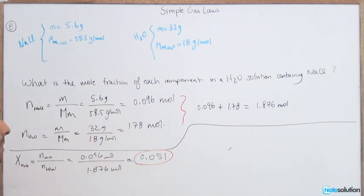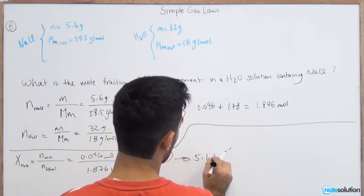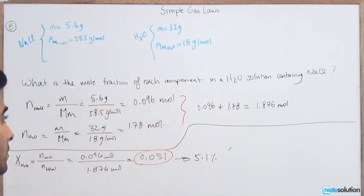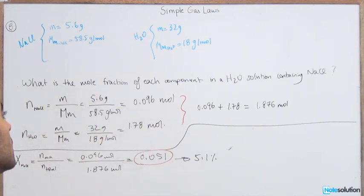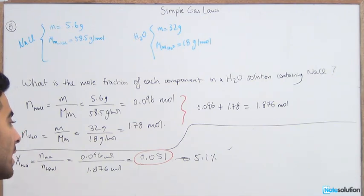You can either keep the mole fraction as 0.051 or convert it to a percentage, which is 5.1%. Since we only have two components — water and NaCl — we can do 100 minus 5.1%, which gives us 94.9%, so the mole fraction of water is 0.949.